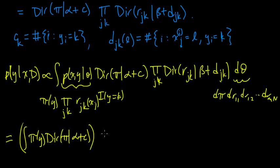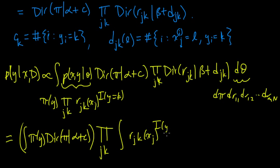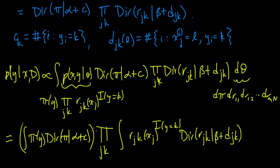Now let's think about a particular J and K, and pull together all the stuff for R_JK. These factors separate, so we can write this as a product over J and K of the integrals of R_JK(X_J) to the indicator that Y equals K, times the Dirichlet(R_JK; β + D_JK), integrated with respect to R_JK.